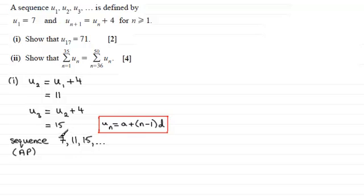So our first term a is 7. The number of terms that we're looking at is going to be 17, n being 17 we want that 17th term and d the common difference is going to be 4, the difference between each of our terms. So that allows me to work out what u₁₇ is through this formula.